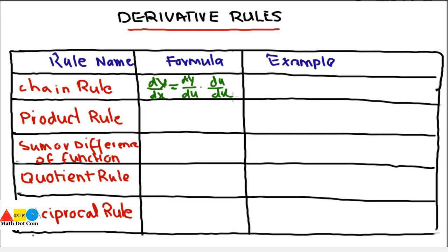What kind of composite functions? Keep this in mind — this is used for composite functions. The example is f(x) equals sine of 3x. This is a composite function — one function is sine and the other is 3x. So chain rule is used for functions that have two functions in the form of composite, like f(g(x)) or g(f(x)). In the next lecture we will see how to use such rules for finding the derivative.